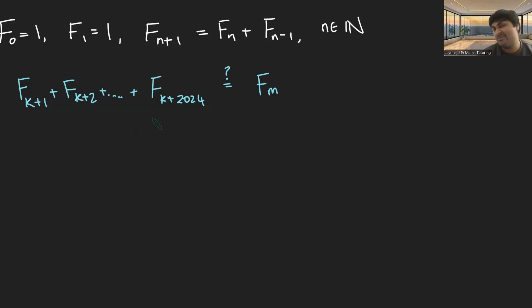What I'm going to do is consider, if this was possible, let's consider F_k+2026. And if I subtract from it the previous Fibonacci number, F_k+2025, that's obviously going to equal F_k+2024.